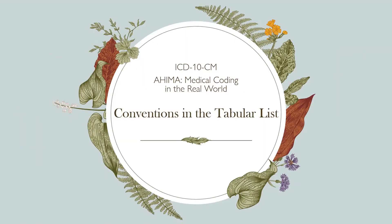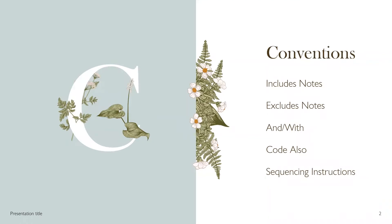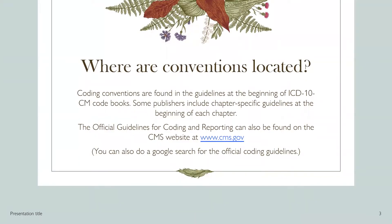Conventions in the tabular list, ICD-10-CM. The conventions we will go over today are the includes notes, excludes notes, and with code also and sequencing instructions. Coding conventions are found in the guidelines at the beginning of the ICD-10-CM code books. Some publishers include chapter-specific guidelines at the beginning of each chapter. The official guidelines for coding and reporting can also be found on the CMS website at www.cms.gov, or via a Google search.